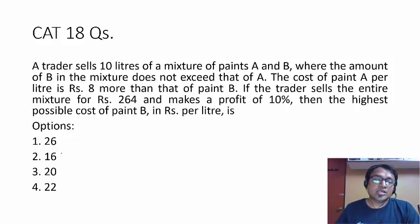So here, the question is, a trader sells 10 liters of mixtures of paint A and B, where the amount of B in the mixture does not exceed that of A. So B is less than A. The cost of paint A per liter is Rs. 8 more than that of paint B. If the trader sells the entire mixture for Rs. 264 and makes a profit of 10%, then the highest possible cost of paint B in Rs. per liter is.